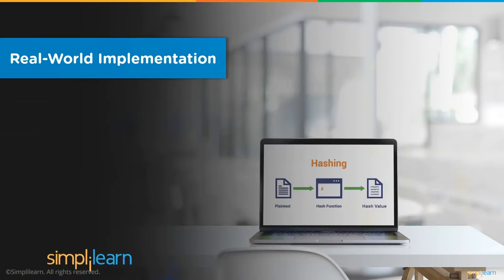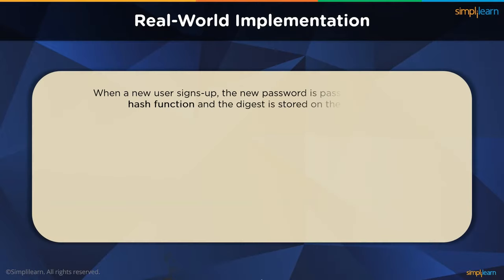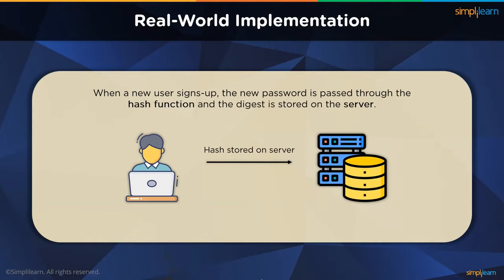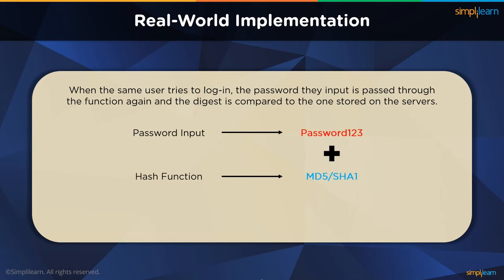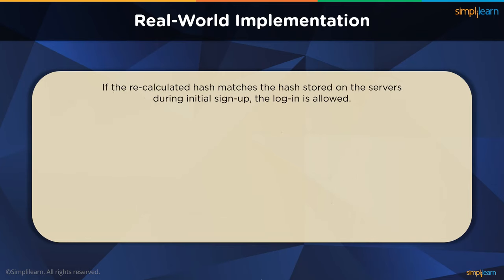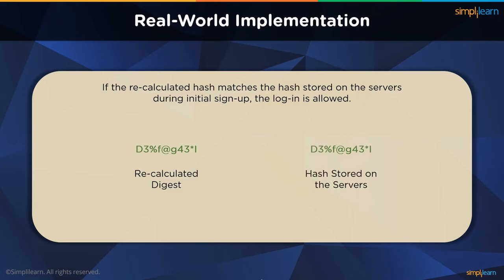Like we discussed earlier, websites use hashing to store users' passwords. When a user signs up to create a new account, the password is run through the hash function and the resulting hash value is stored on the servers. The next time a user logs in, the password entered is passed through the same hash function and compared to the hash stored on the server. If the newly calculated hash is the same as the one stored on the website server, the password must have been correct, because same inputs will always provide the same outputs.